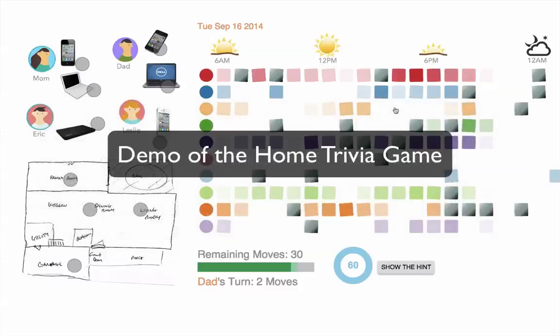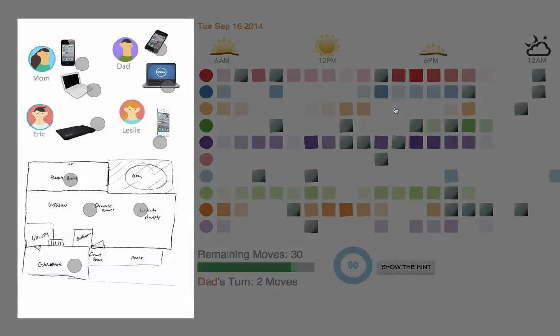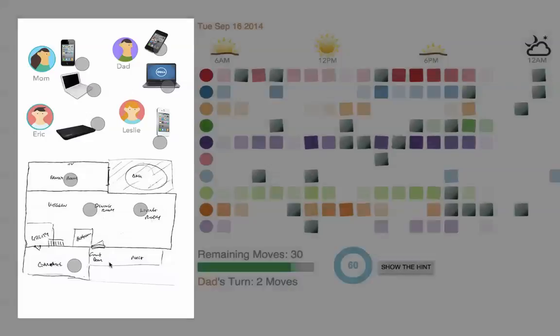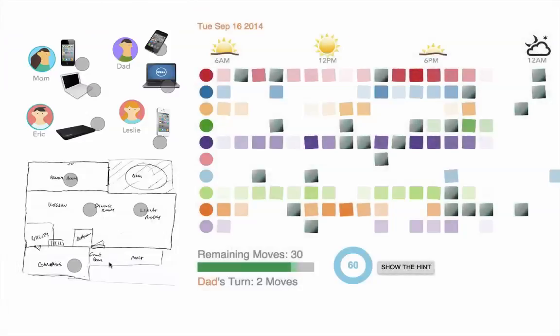So here is what a puzzle looks like. What you are seeing on the left-hand side are the devices and rooms tracked by the activity trackers we deployed in the participants' home. We call those devices and rooms activity sources.